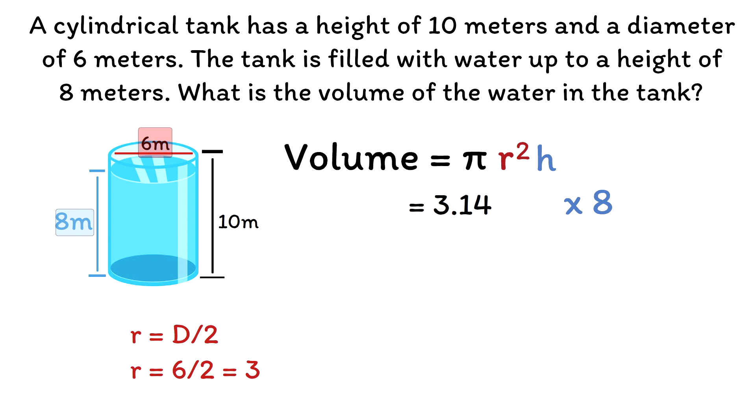Substituting the values, we have 3.14 times 3 squared times 8. By order of operation, we have to work on the 3 squared first. 3 squared is 9. This gives us 3.14 times 9 times 8. To get the volume of the water, we multiply 3.14 by 9 and by 8. And this gives us 226.08 meter cubed as the volume of the water.